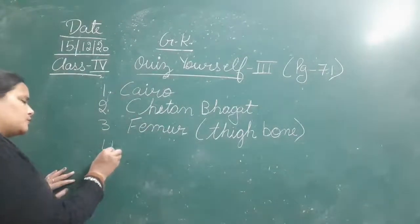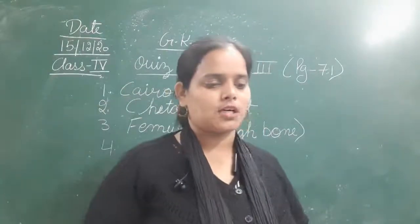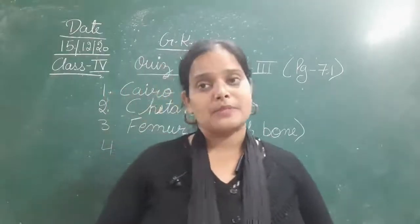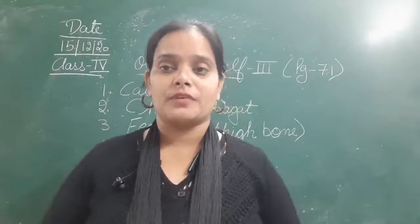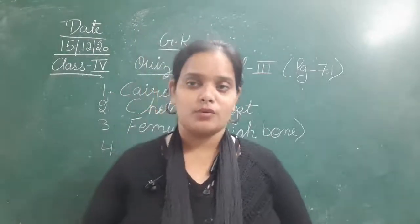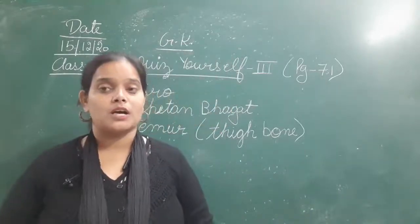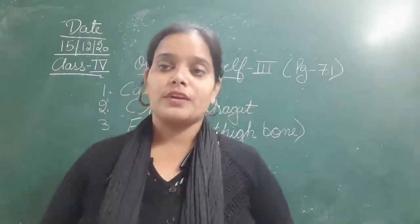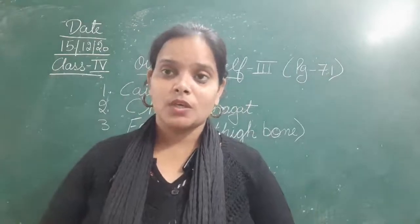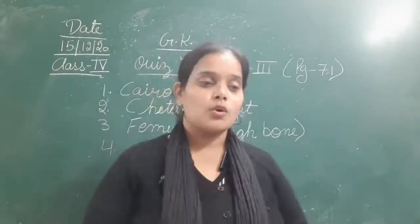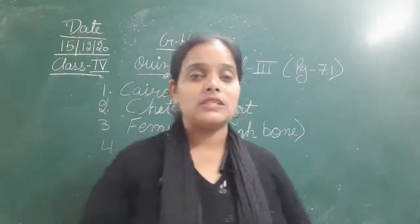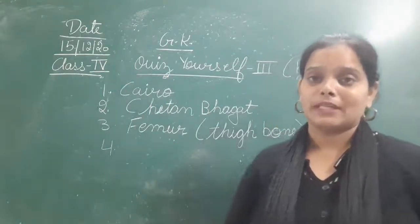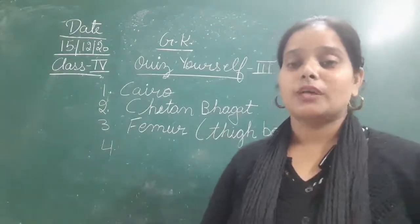Moving to the fourth question: which is the largest herbivore on land? Now, there are three types of feeders among animals. The first is herbivores. What are herbivores? Those animals who feed only on plants, grass, and leaves are known as herbivores. So animals that eat only grass, plants, and leaves — they are herbivores.